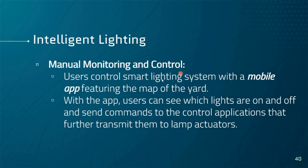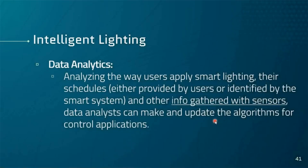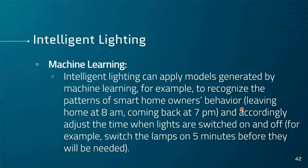There is also manual monitoring and control, because users need to control the smart lighting system with a mobile or web app. With the app, users can see which lights are on or off and send commands to the control application, which transmits them to the lamp actuators. Data analytics analyzes how users apply smart lighting, their schedules, models either provided by the user or identified by the smart system, and other info from sensors.